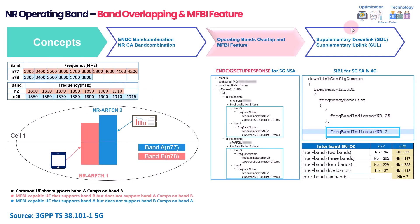The second part covers a very important concept: operating bands and the MFBI feature. In a normal scenario there is a one-to-one relationship between the frequency spectrum and the band — for example, a spectrum from 4100 to 4200 MHz directly maps to N77. This is the most common case where one spectrum has only one NR band.